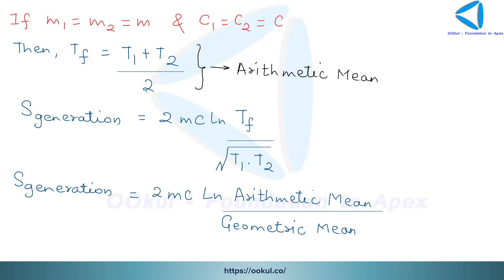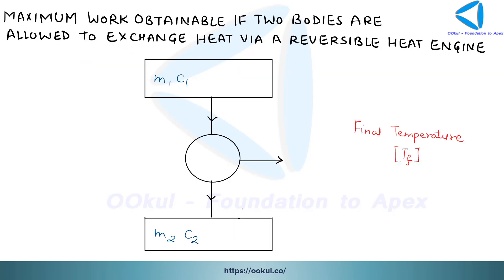For the special case where m1 = m2 = m and c1 = c2 = c, the final temperature becomes (T1 + T2)/2, which is the arithmetic mean. The entropy generation or change of entropy of the universe equals 2mc·ln(Tf / √(T1·T2)), which is 2mc times the natural log of the arithmetic mean divided by the geometric mean.